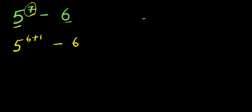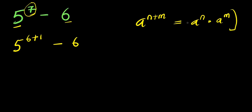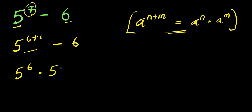Now if you have a to the power of n plus m, this equals a to the power of n times a to the power of m. By applying this identity right here, this is 5 to the power of 6 times 5 to the power of 1, minus 6.